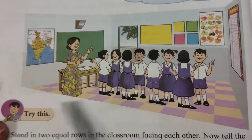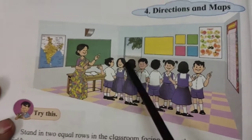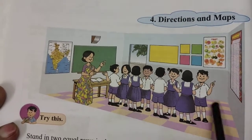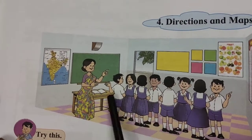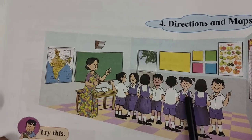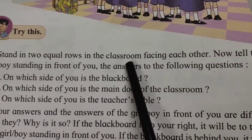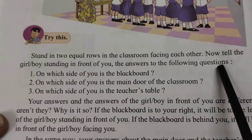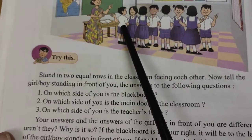Now children, you have seen this picture. In this picture, the children are standing facing each other — this is a classroom. When we look at direction, everyone's answers will be different because they are facing each other.